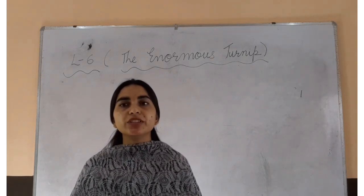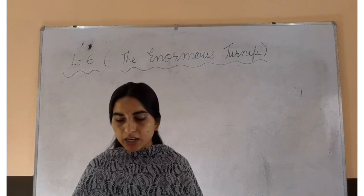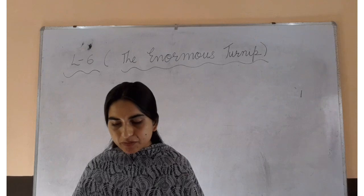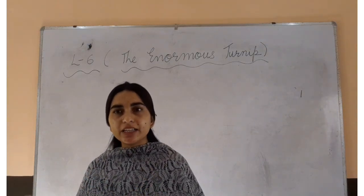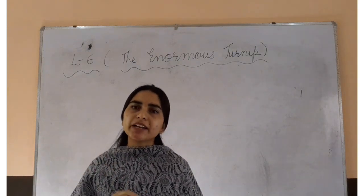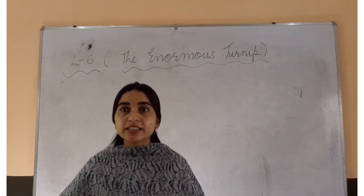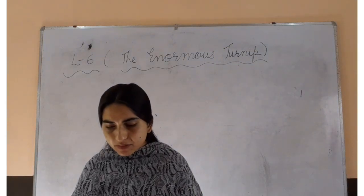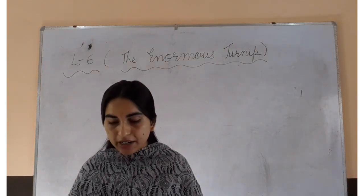Enormous turnip means ek anokha sa shalna. Let's begin first of all with the introduction part. A farmer grows a turnip seed. It grows into a bigger and bigger turnip. A farmer is there and he grows one turnip seed, and later on he finds that the turnip grows bigger and bigger and develops as an enormous turnip.